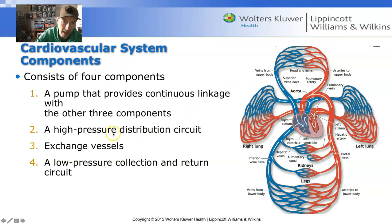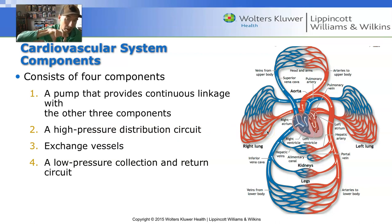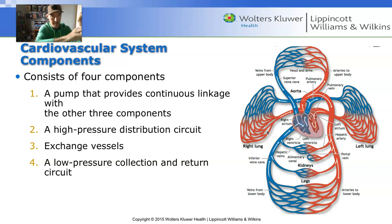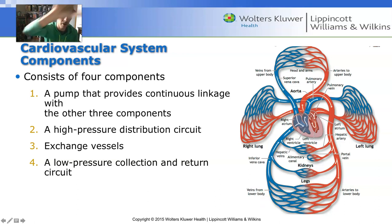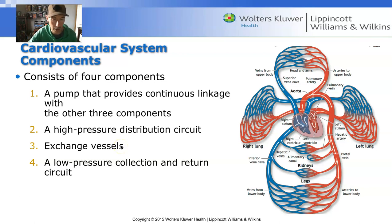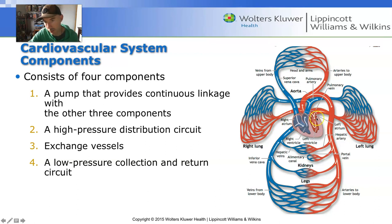Component two is the high-pressure distribution circuit — the arterial side. Pressure is higher there because it's driving blood from the heart into the tissues. Things move from high to low pressure, driving blood from the heart into the exchange vessels. Component three is those exchange vessels — the capillaries. Component four is the lower-pressure venous side, returning blood back to the heart, where it circulates to the lungs and back into the left side.